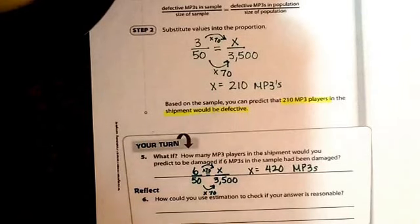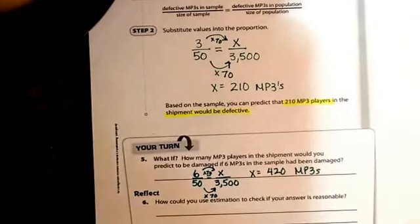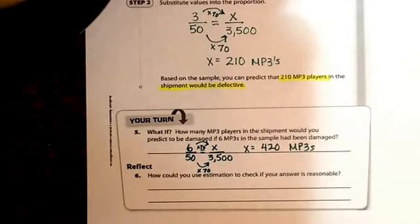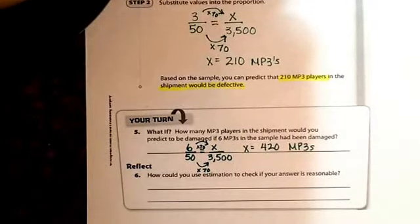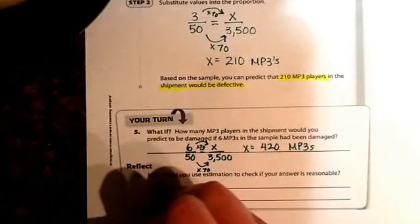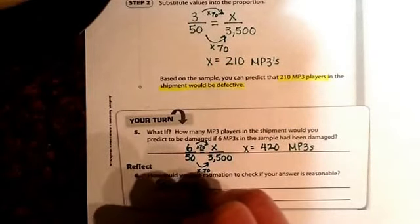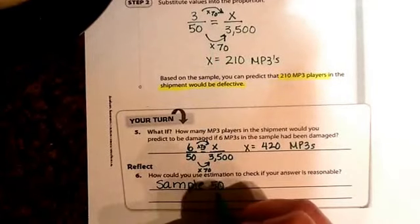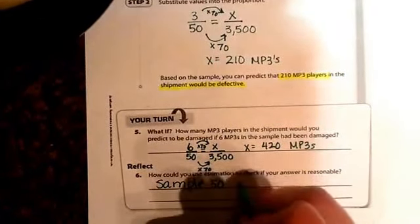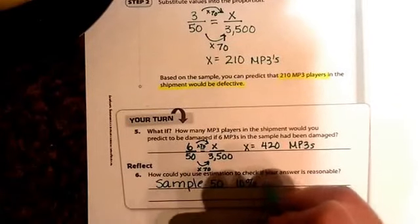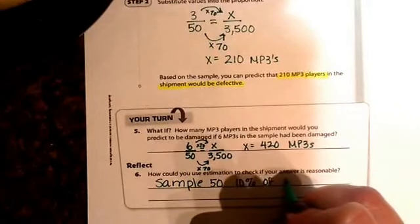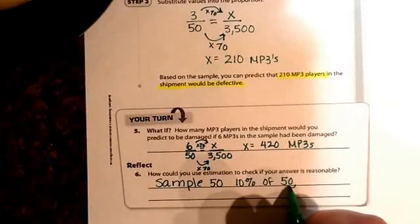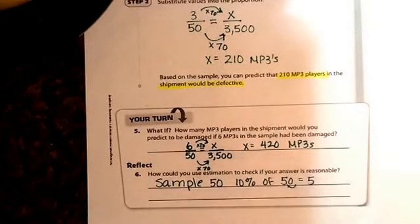In the second question, it asks how could you use estimation to check if your answer is reasonable? Well, if you are taking a sample of 50, it's easy to estimate 10% of any number. So if we try to estimate 10% of 50, really all we're doing is bringing that decimal in. That would equal 5.